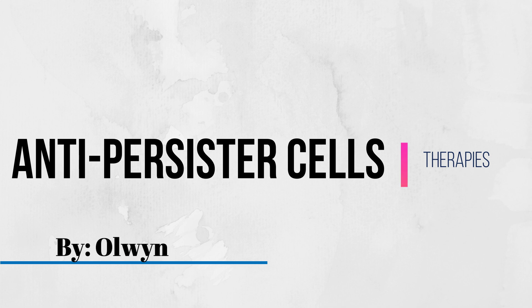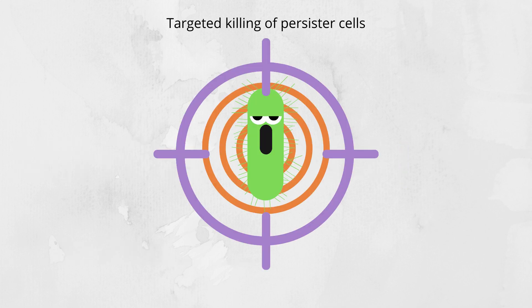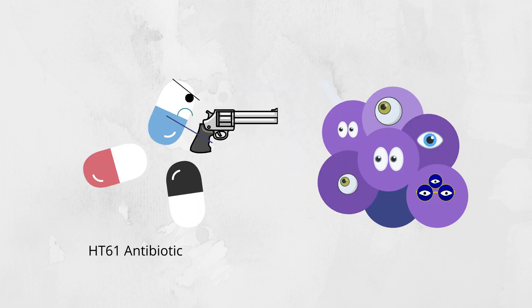Now, I will speak about anti-persister cell therapies. Group 1 is direct killing of persister cells. HT61 is a small fluoroquinolone-based compound. It is a narrow-spectrum antibiotic with increased bactericidal action against stationary phase, gram-positive organisms. HT61 is particularly effective against staph aureus. It directly kills the bacterial cell by depolarization of the membrane and destruction of the cell wall.